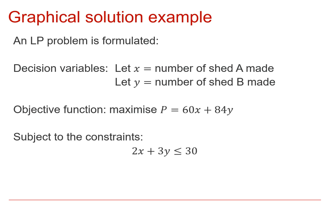And we had the constraints, 2x plus 3y is less than or equal to 30, and 5x plus 5y is less than or equal to 60, plus the two natural constraints of x and y both being greater than or equal to 0.